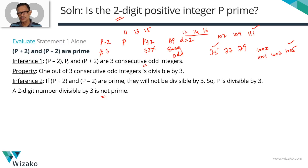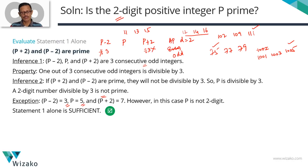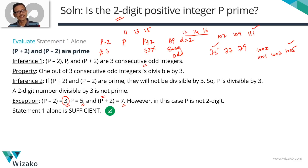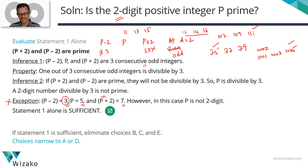Is there an exception? Yes — one: when p − 2 = 3, p = 5, and p + 2 = 7. In that case p − 2 is the prime number 3, which is itself divisible by 3. But in that exception p = 5, which is not a two-digit number. So this exception does not apply. Given that p is a two-digit positive integer, p is divisible by 3, and the only prime divisible by 3 is 3 itself (not two-digit). So p is certainly not prime. Statement 1 alone is sufficient — eliminate choices B, C, E. We're down to A or D.